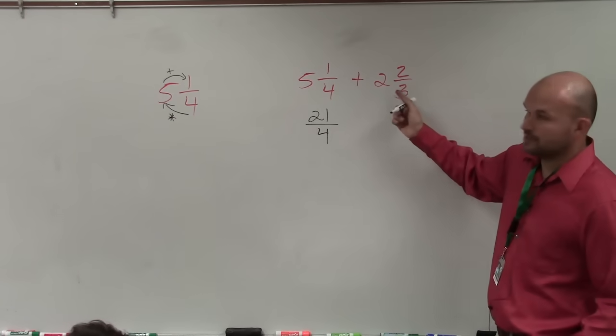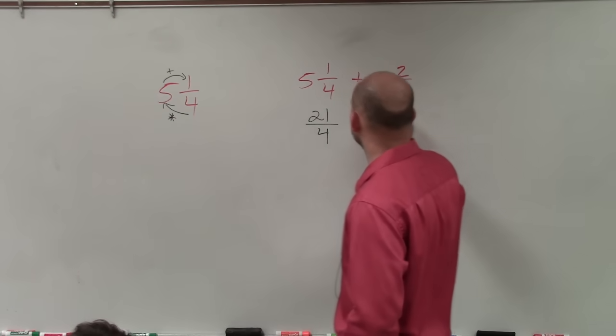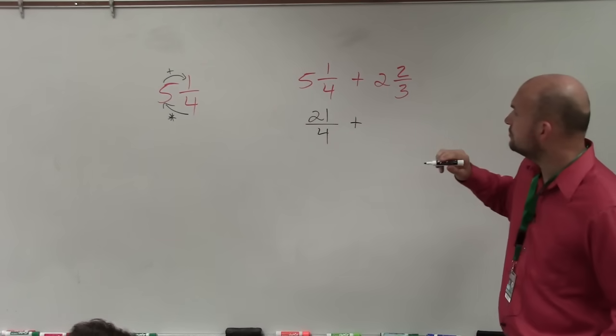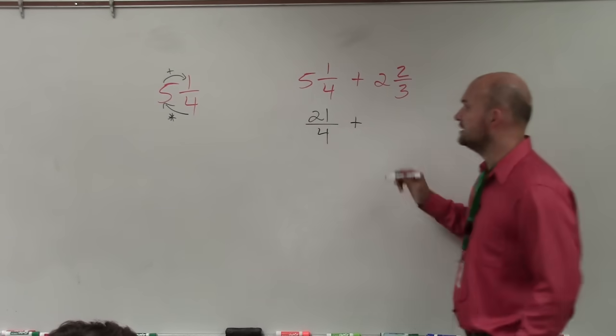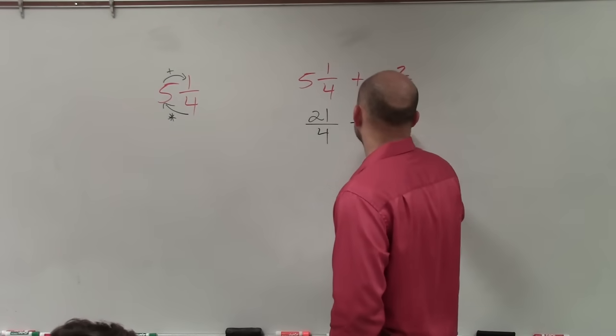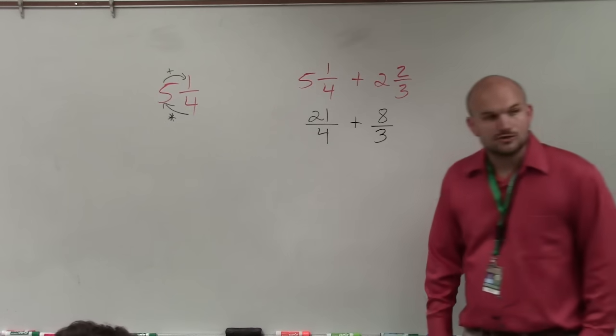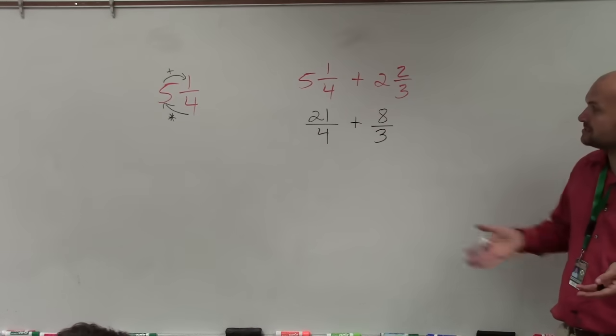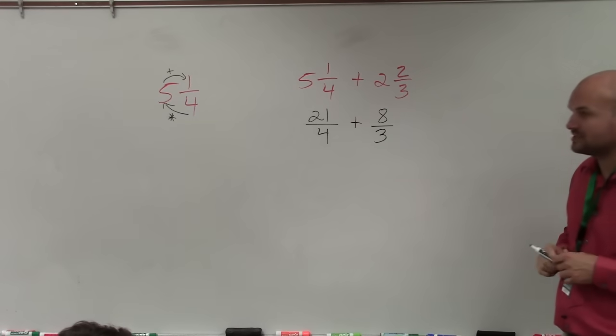Then I do the same thing over here. So that's 21 over 4, plus 3 times 2, which is 6, plus 2 is 8. So now I've written it as improper fractions. And now I have 21 over 4, plus 8 thirds.